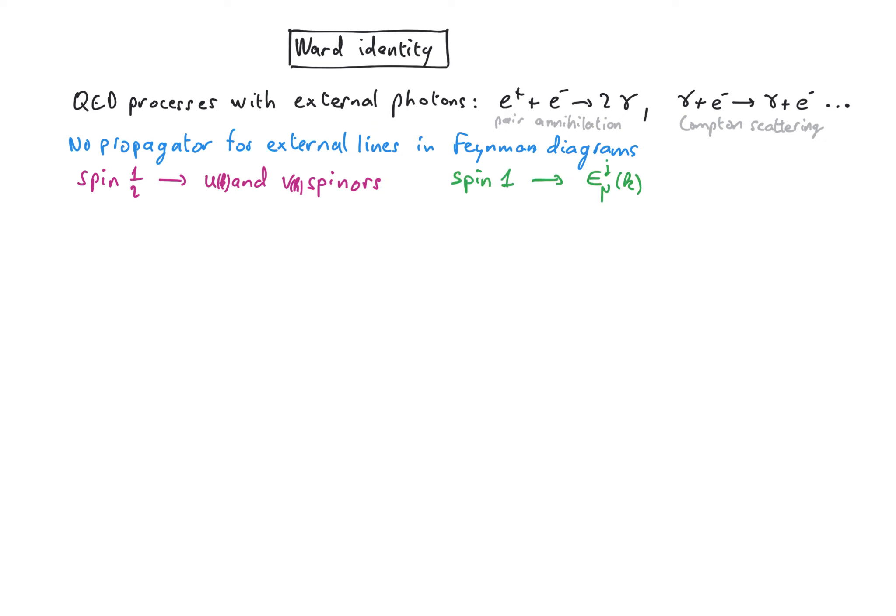So when the particle, spin 1 particle is massive, we have three possible polarizations and we usually distinguish between transversal polarizations which are perpendicular to the direction of propagation of the particle and the longitudinal polarization which is parallel to it.